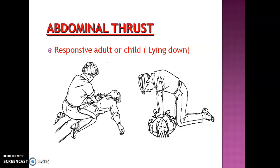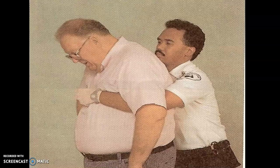For abdominal thrust in both adults and children, first position the victim, then apply pressure as shown — both hands pressing inward and upward in the abdominal region. In cases of obesity, position your hands slightly higher, towards the chest region, and press with both hands from that area.